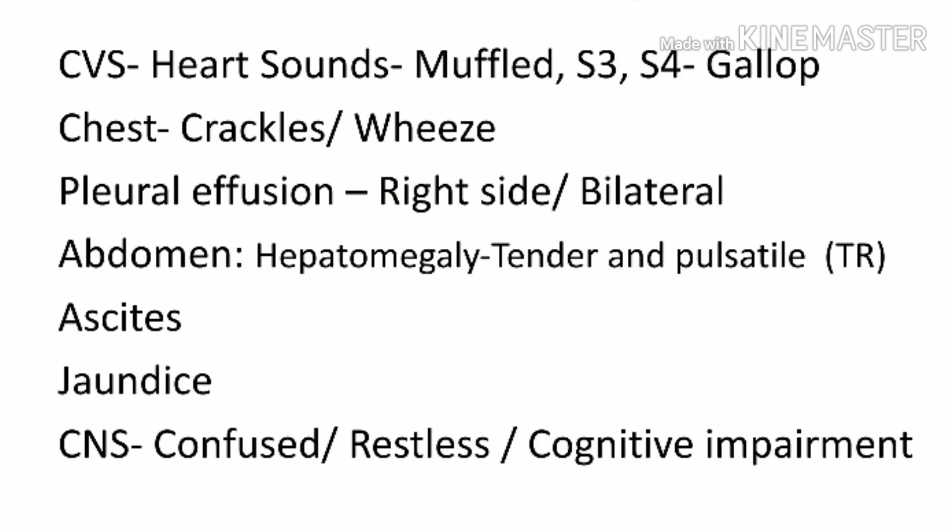Pleural effusion is more common on the right side or bilateral; bilateral effusion is more common in biventricular failure. The abdomen shows hepatomegaly due to liver congestion, with tenderness from capsular tension; the liver may be pulsatile in tricuspid regurgitation. Ascites is seen in later cases, jaundice in chronic cardiac failure, and many patients have impaired cognitive function due to confusion or restlessness.